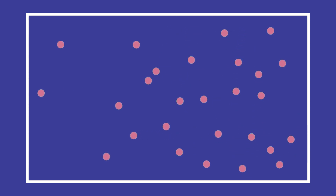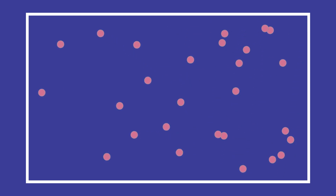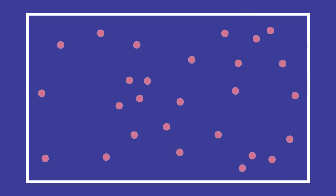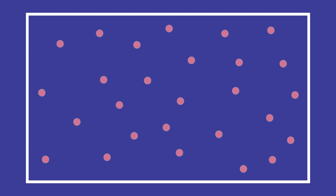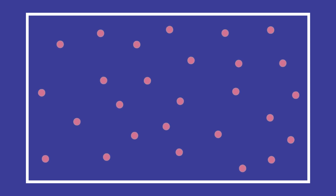This is because the lowest energy state for the molecules is to be spread out — just like when it comes to your room. If no energy is put into keeping everything clean, your things end up everywhere. While some of the molecules might move from the low concentration side toward the high concentration side, they're in the minority. In the end, this random movement results in the molecules reaching an equilibrium, the same number on both sides. This process of molecules moving from high concentration to low concentration is called diffusion.